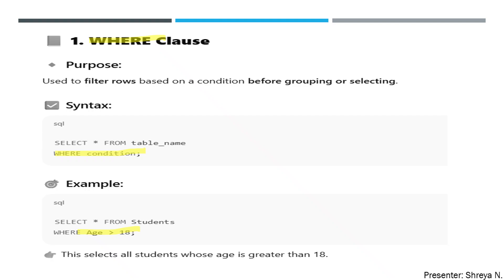The purpose of the WHERE clause is that it filters rows based on a condition — before grouping, selecting, or retrieving. I hope you understood the WHERE clause. It has very long complex explanations elsewhere, but I have chosen the simplest explanation for you.